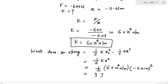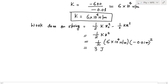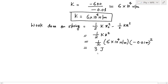This is the work done on the spring. It is a positive quantity, which is logical because when you are compressing the spring you are doing some work on it. Similarly, if you are elongating the spring you are also doing some work on it. That is why this work done is a positive quantity of 3 Joules.